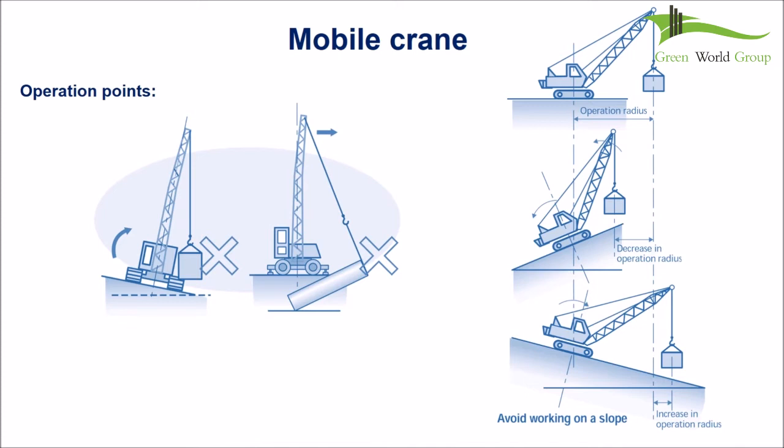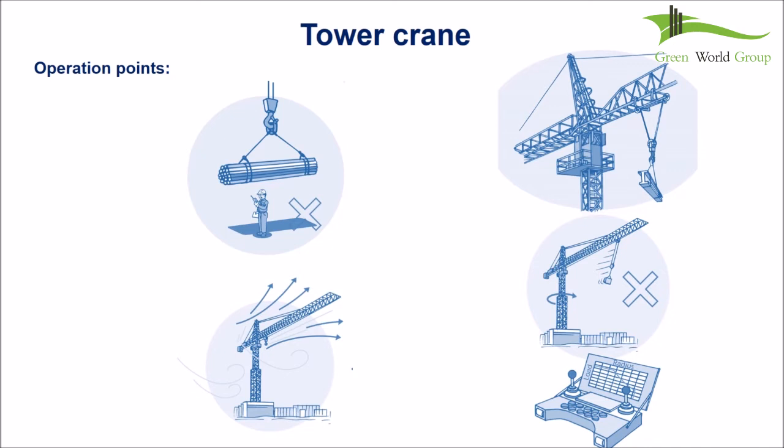For tower crane operation: ensure that the automatic safe load indicator is installed. Provide safe means of access and egress. Ensure that lifting routes do not collide with any object, do not pass across any building, and do not pass over any person. Travel speed shall be as slow as possible to ensure load stability. Be aware of the height of lifting, the length of the crane's trolley, and refer to the load chart.